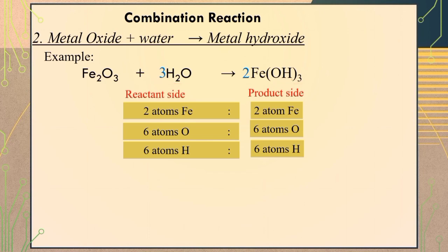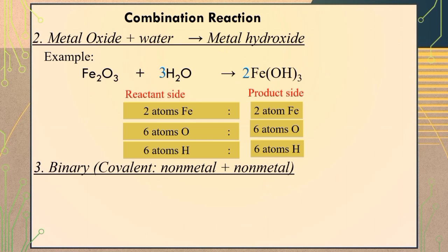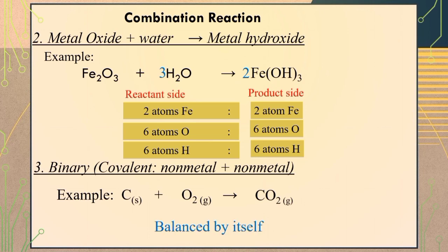The third type of combination reaction is binary covalent. Binary covalent is a combination of two non-metal elements. For example, when solid carbon combines with gaseous oxygen, it will produce carbon dioxide gas. With just a glance we can say that this equation is balanced by itself.